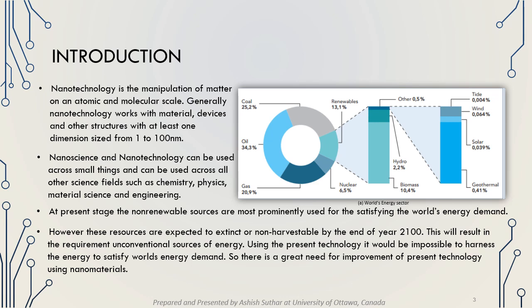Let's start with the introduction. Nanotechnology is the manipulation of matter on an atomic and molecular scale. Generally, nanotechnology works with materials, devices, and other structures with at least one dimension size from 1 to 100 nanometers. Nanoscience and nanotechnology can be applied across all other science fields such as chemistry, physics, material science, and engineering.